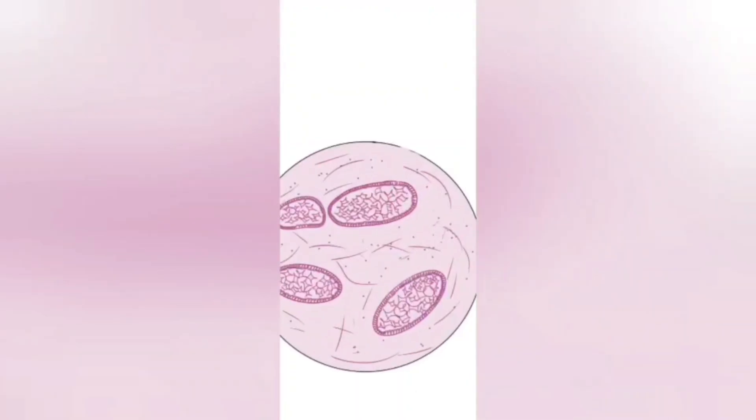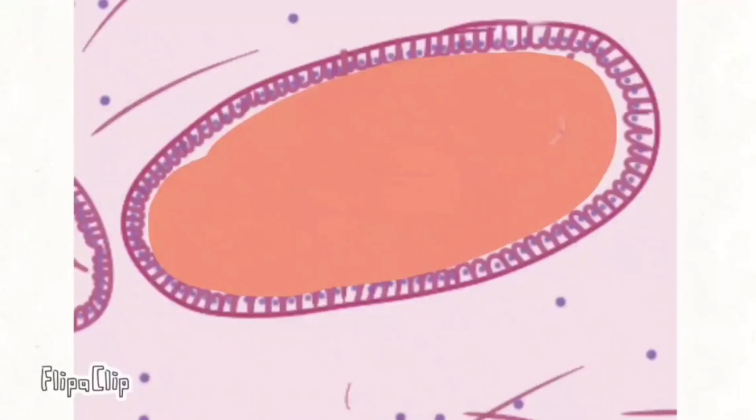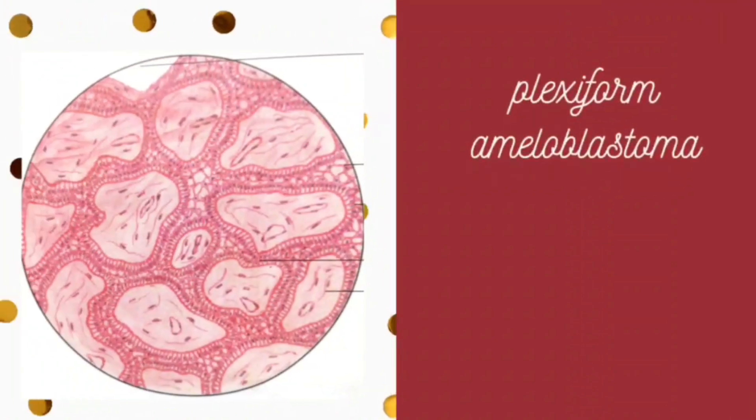The central cells are stellate reticulum-like cells. These stellate reticulum-like cells sometimes undergo cystic degeneration.